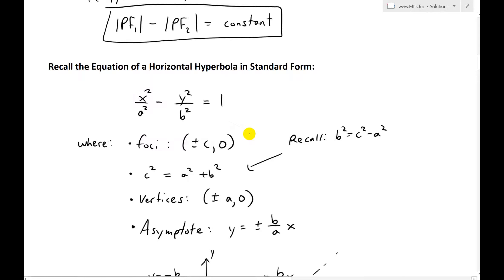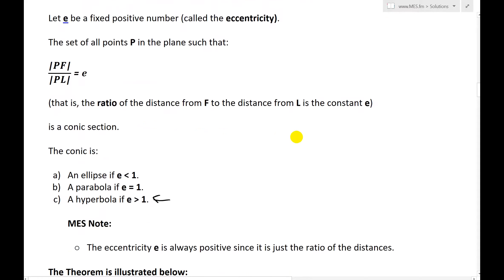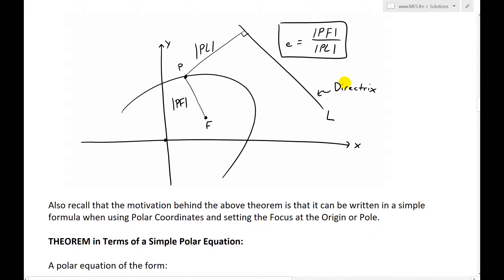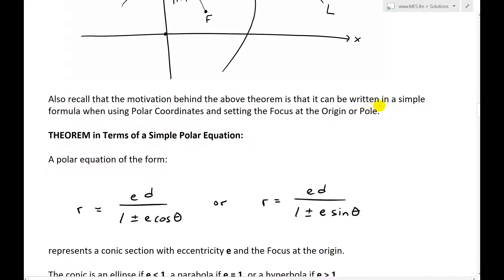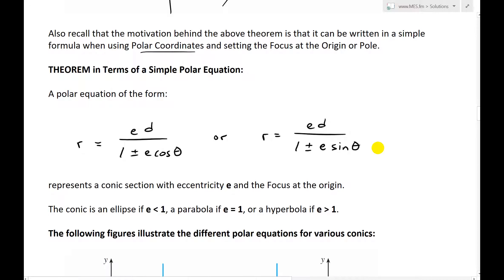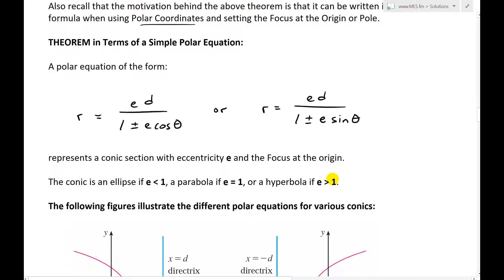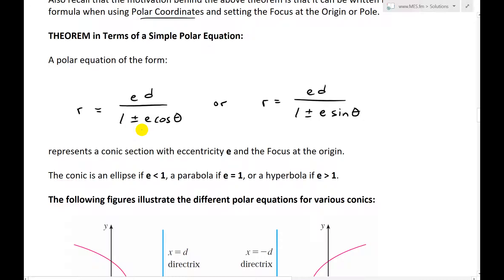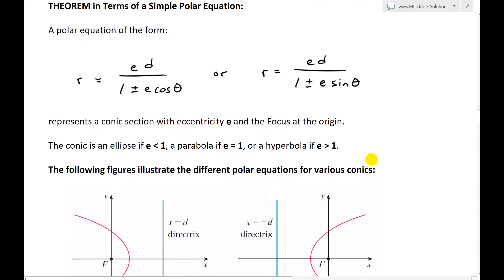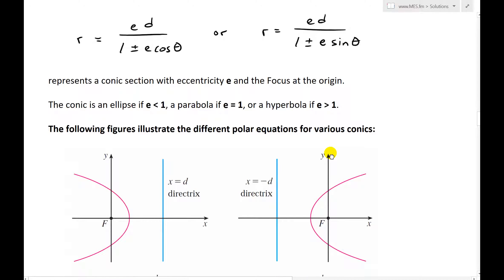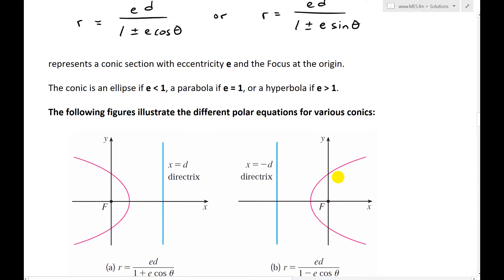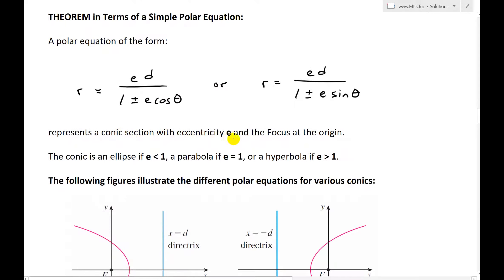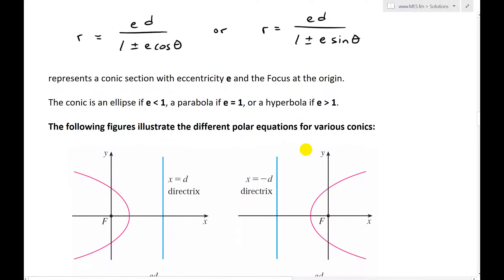What I'm going to do in this video is prove that this is, in fact, the exact same — we'll get the exact same result in Cartesian when we convert this theorem into Cartesian coordinates. Also recall that the motivation behind this theorem is that it can be written in a simple formula using polar coordinates with the focus at the origin or pole — a simple equation that describes all three: parabolas, ellipses, and hyperbolas. That theorem in polar form is r equals e times d divided by 1 plus or minus e cosine theta, or r equals ed divided by 1 plus or minus e sine theta.